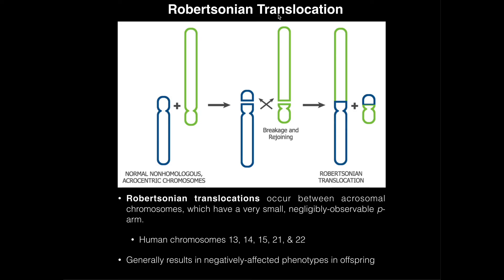If there's a non-disjunction event prior to fertilization, one of those gametes — whether male or female — will end up carrying two copies of that particular chromosome. For example, if the sperm cell carries one copy of chromosome 21, but the secondary oocyte somehow carries two copies, then when fertilization occurs — two plus one equals three — that individual will have three copies of chromosome 21, which is Trisomy 21 or Down syndrome.